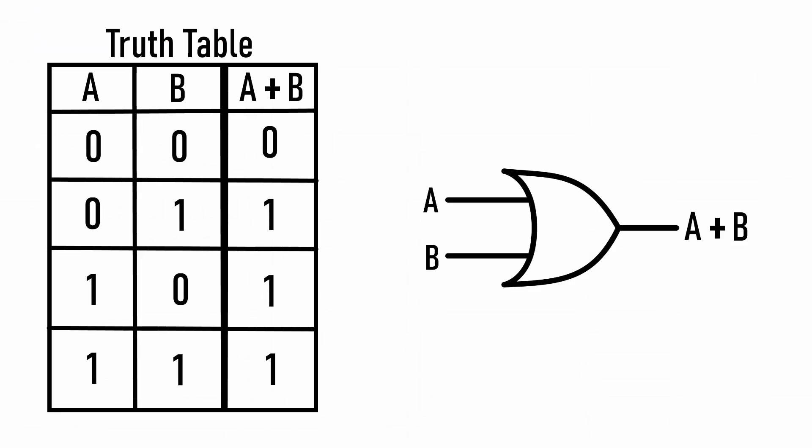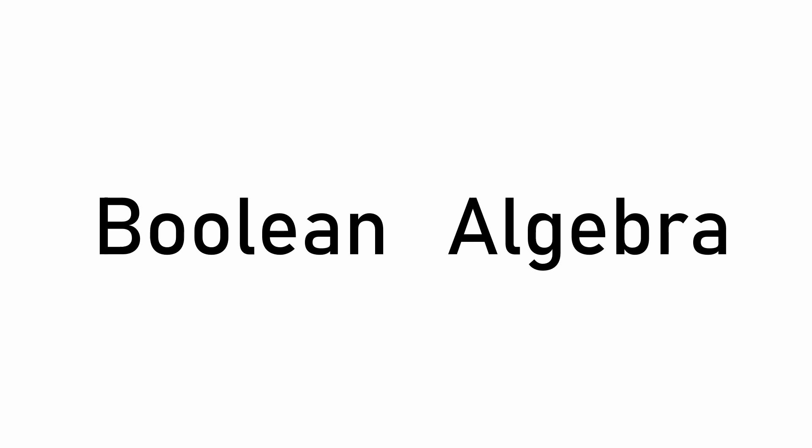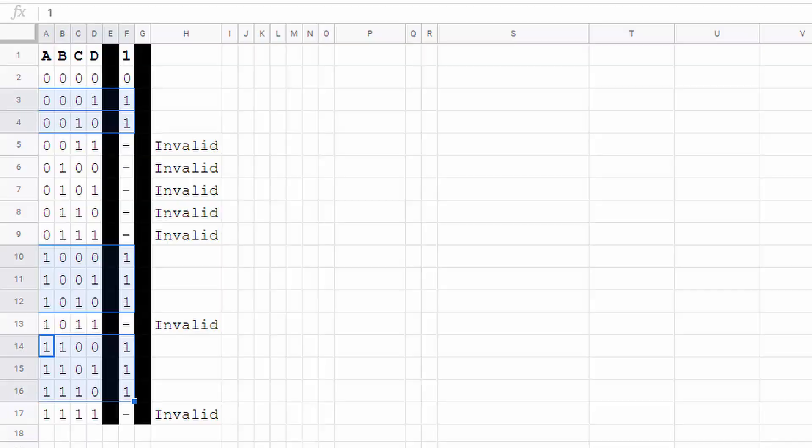Now comes the hard part. Simplification. We need to somehow convert these input and output combinations into a logical system. Enter boolean algebra. Yeah, it doesn't sound so cool, but we desperately need it here. I'll give us a way to convert the table into a system. The first step is the easiest. Write out all of the combinations of inputs that give you a 1 as an output.